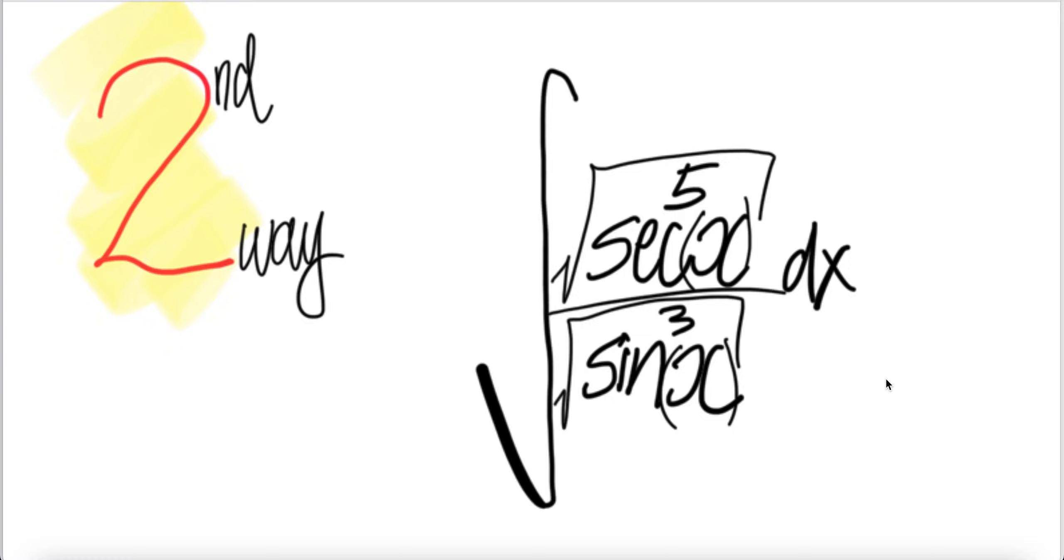Let us look at the second way to get the integral of square root sec x to power 5 divided by square root sin x to power 3 dx.